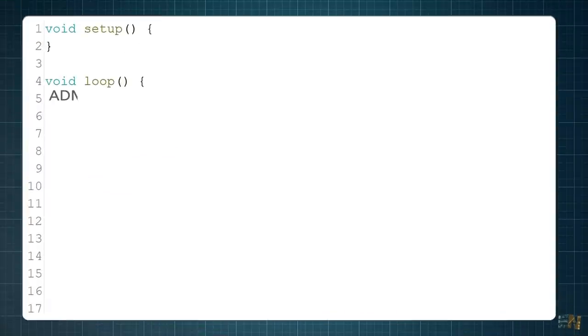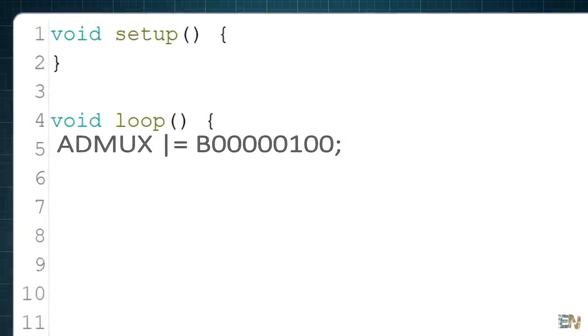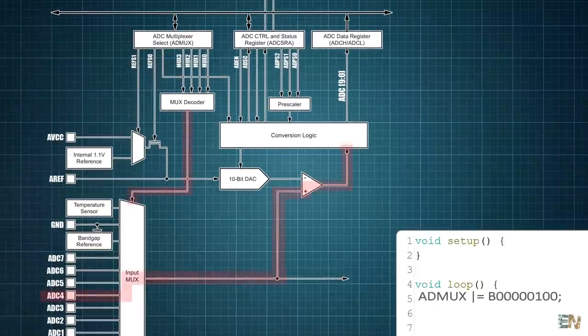So in the code, if you want to read the A4 input for example, we make this line. ADMAX or equal to 00000100. So now A4 is connected to the ADC conversion block.